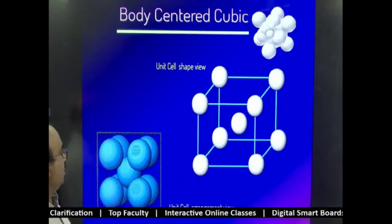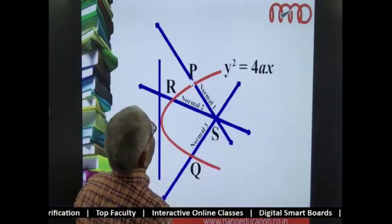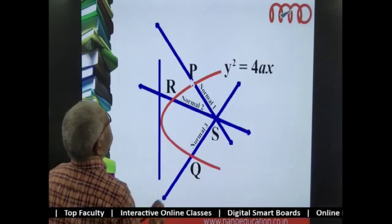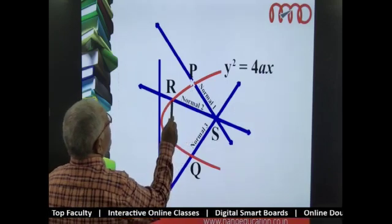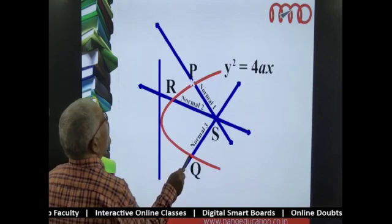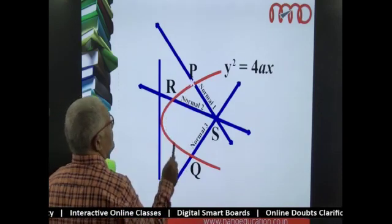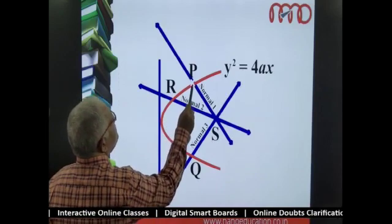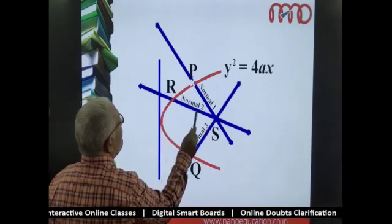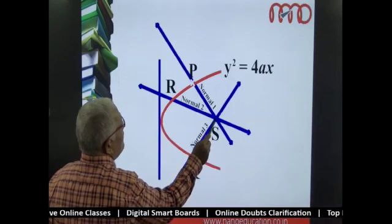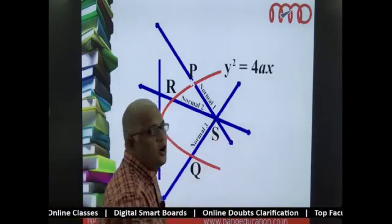Here I have chosen a point P here, a point R here, and a point Q here. What are those three points? Three points on the parabola. And at those three points, the normals drawn are meeting at the point S. So this point S is the point of concurrency